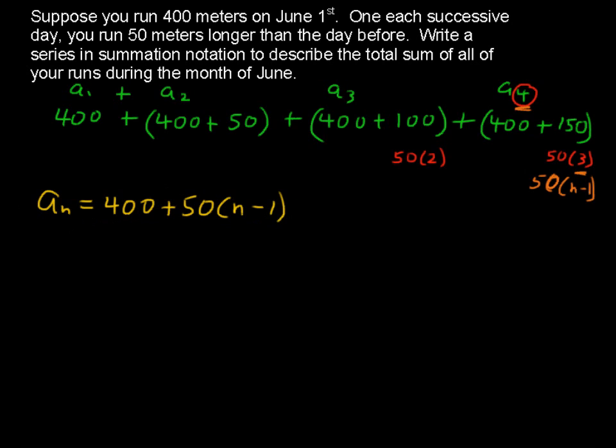Alright, so that's how we write the nth term. Now let's build up. What are we adding here? The summation notation, we use the capital sigma, the Greek letter. We're going to start n at 1 at the first term, and we'll say 400 plus 50 times n minus 1. And that works.